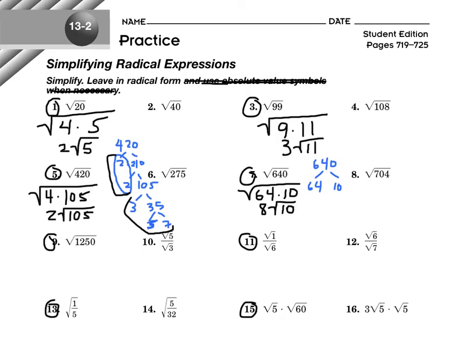1,250 — that's big. I'm using a graphing calculator as a resource. Clearly 25 goes into 1,250, and it leaves 50. What's half of 1,250? 625. And 625 is a perfect square. So 1,250 is 625 times 2, and 625 is 25 squared. There's nothing wrong with doing a little trial and error on your calculator to recognize the factors. You want the biggest perfect square factor you can find.